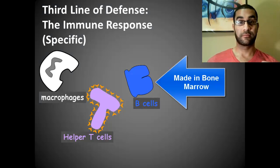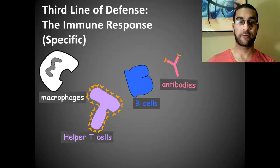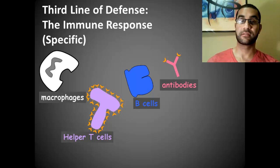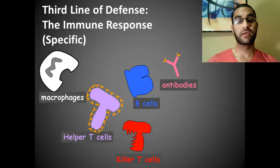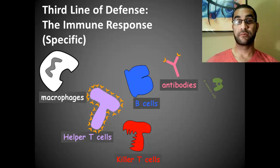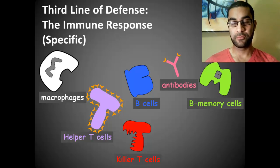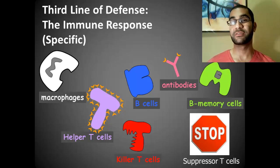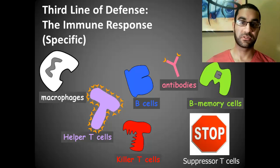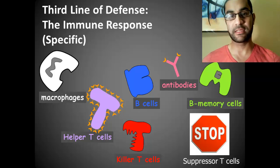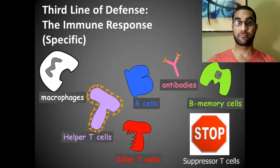We're going to talk about a type of T cell called the helper T cell that works directly with the macrophage. We have B cells, also known as plasma B cells, that produce proteins called antibodies. Another type of T cell besides the helper is the killer T cell, also made in the thymus. We have memory B cells that play a very important role at the end of the infection. And there's a suppressor T cell that brings everything back to normal once the population has been controlled.